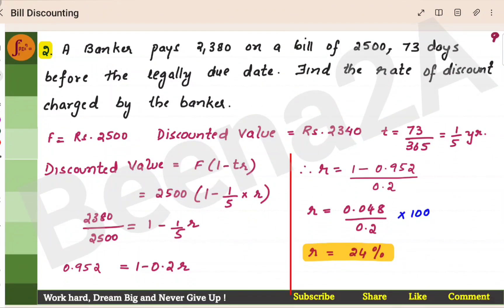Here's the second problem. A banker pays 2380 on a bill of 2500, 73 days before the legally due date. Find the rate of discount charged by the banker. So you will have to find R.